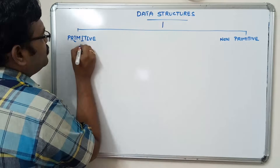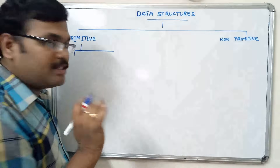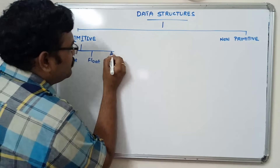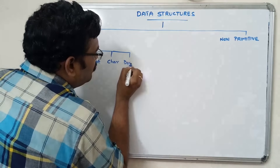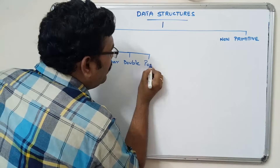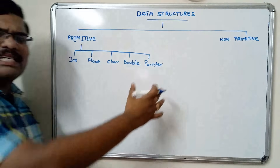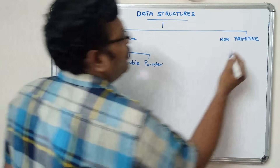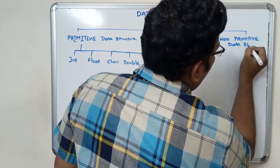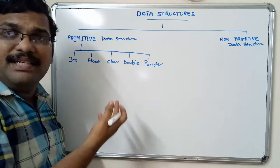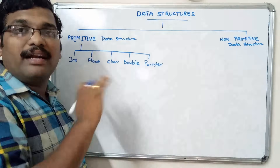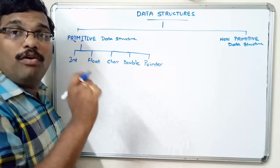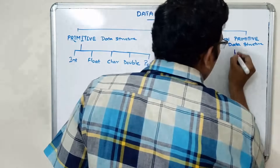Primitive data structures are our primitive data types — int, float, character, double, and pointer. We have studied these in C language and we call them primitive data types. Each is a single memory location which can hold a value only.